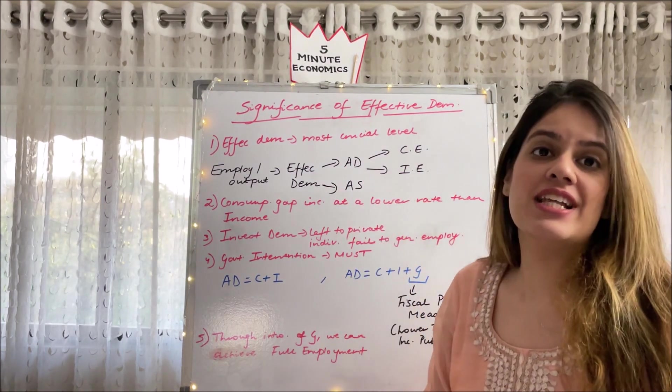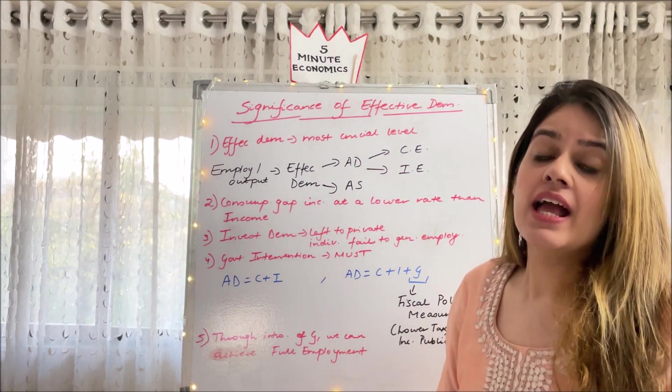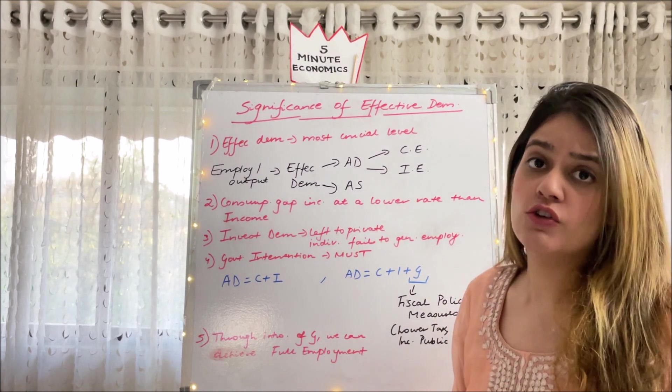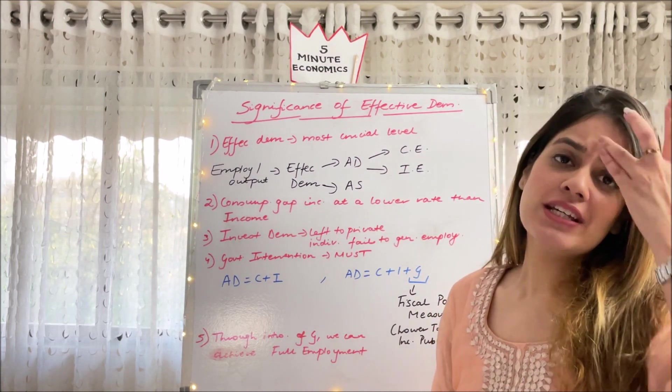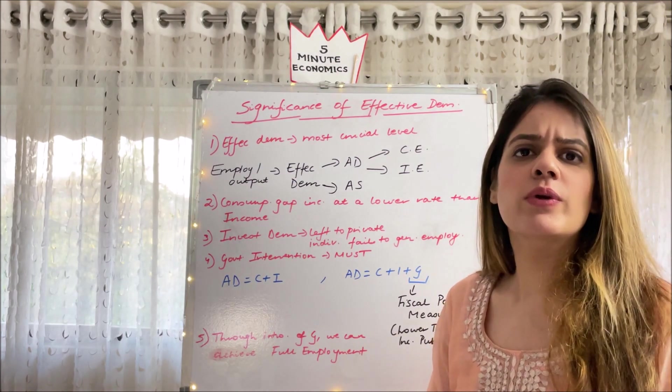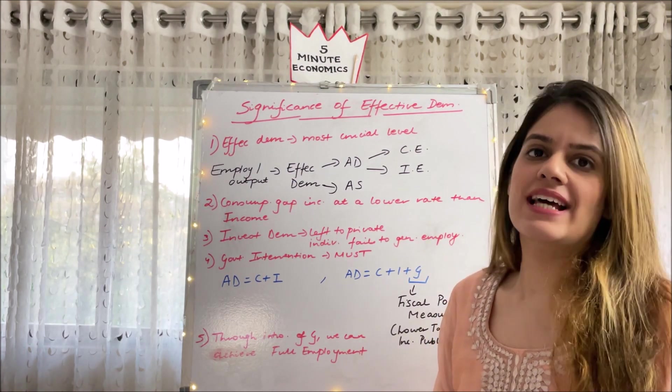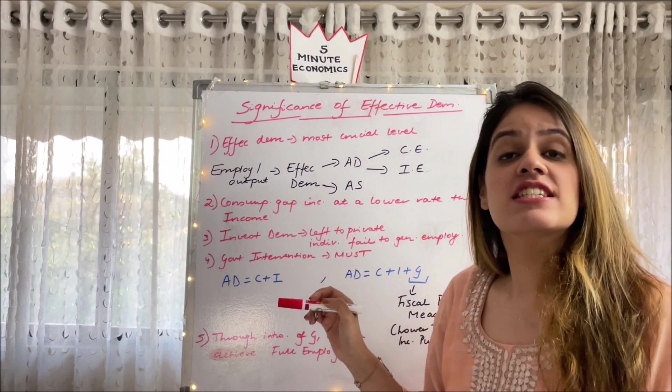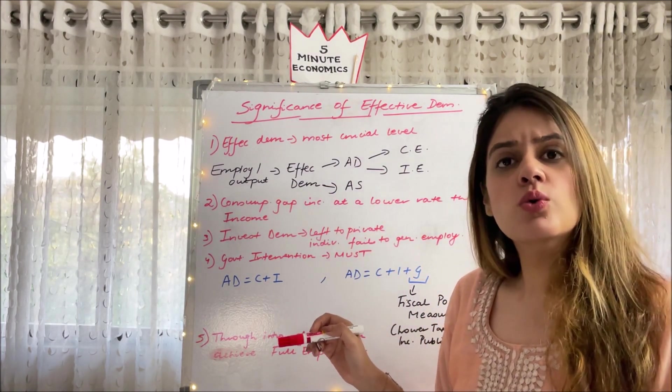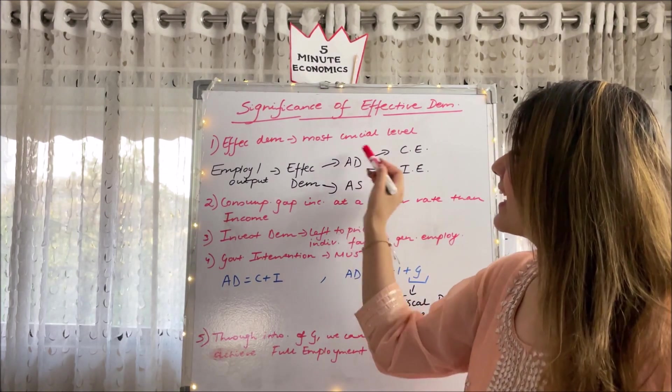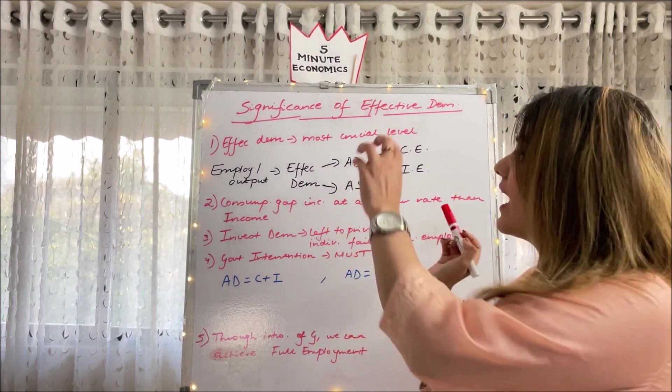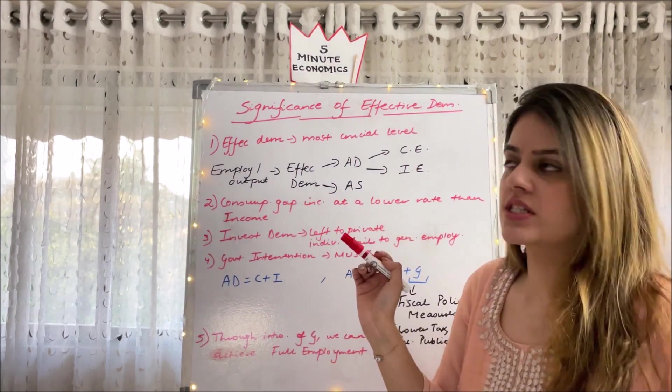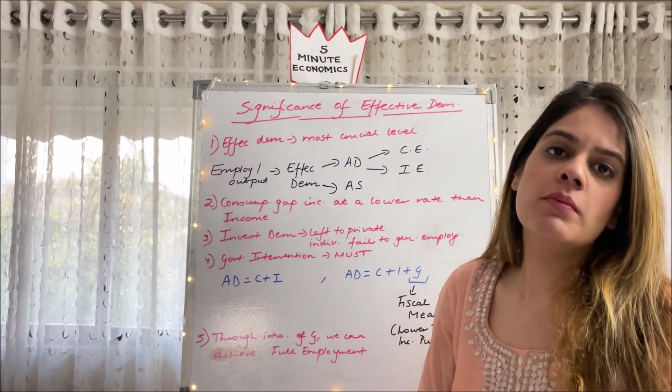But what is effective demand made up of? It is made up of AD and AS, which is aggregate demand and aggregate supply. Here under Keynesian theory, we are always talking about short run. Why? I've already told you, Keynes was a man who believed that in the long run we all are dead. So all his analysis are short-run analysis. And in the short run our AS is relatively stable, so the onus lies on aggregate demand.